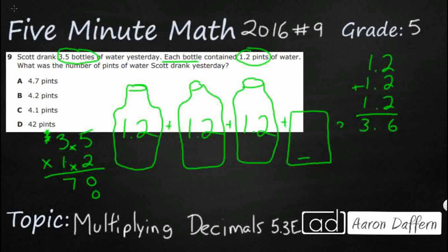And then 1 times 5 is 5. 1 times 3 is 3. Add them up. You get 0, 12. There we go. 420.